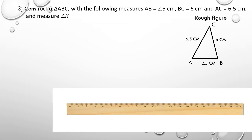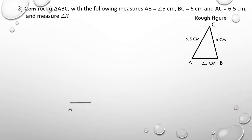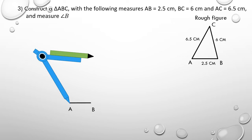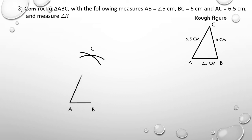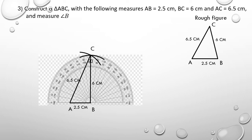Take a ruler, measure 2.5 centimeter, and draw a line segment — name it as AB. With A as center, take 6.5 centimeter radius in your compass and draw an arc. Similarly, with B as center, measure 6 centimeter radius and draw another arc which cuts the previous arc at C. Join AC and BC and write the given measurements.